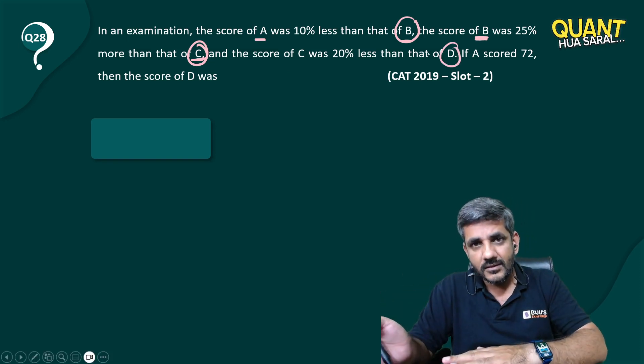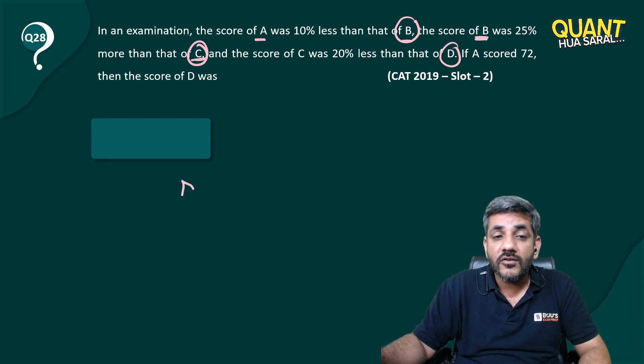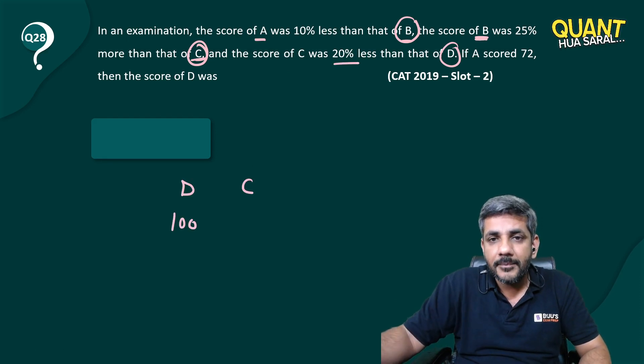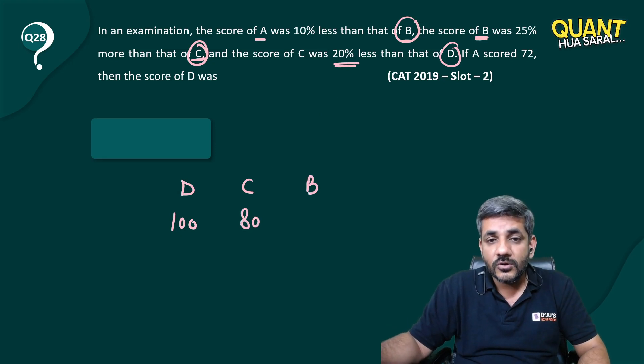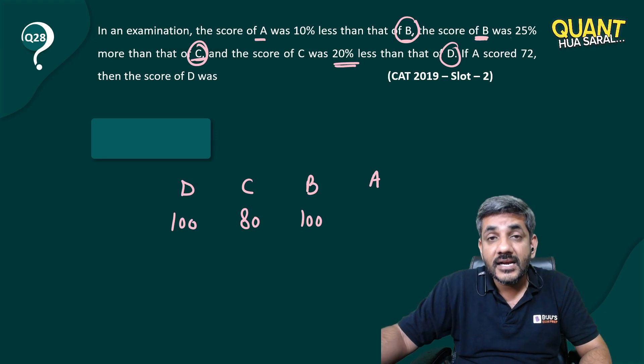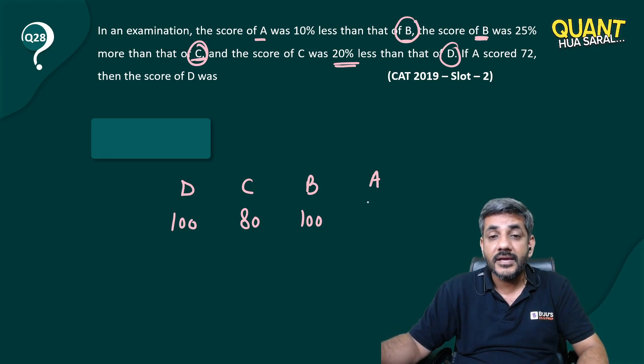Therefore, it's better to assume the score of D as 100. C's score is 20% less than D, so C is 80. B's score is 25% more than C, so 25% more than 80 is again 100. The score of A is 10% less than B, so 10% less than 100 is 90.